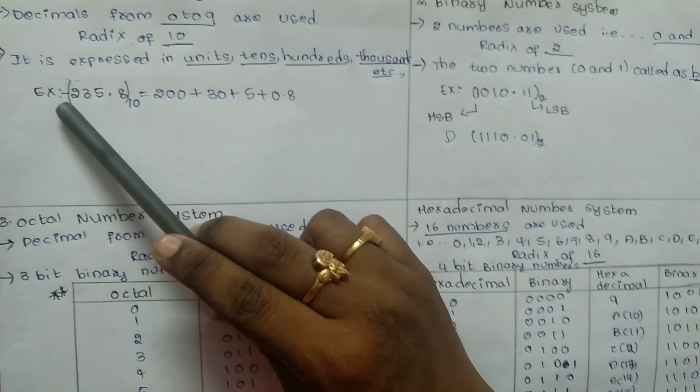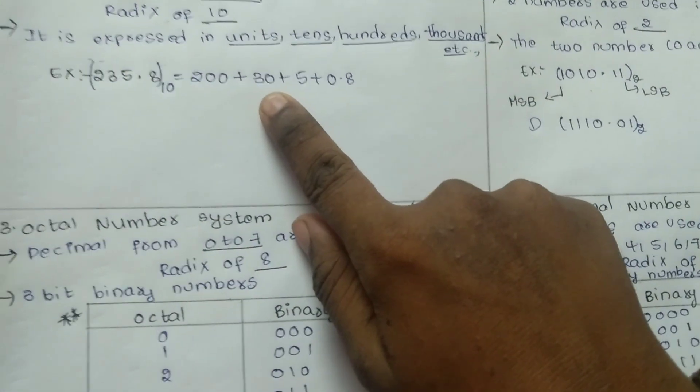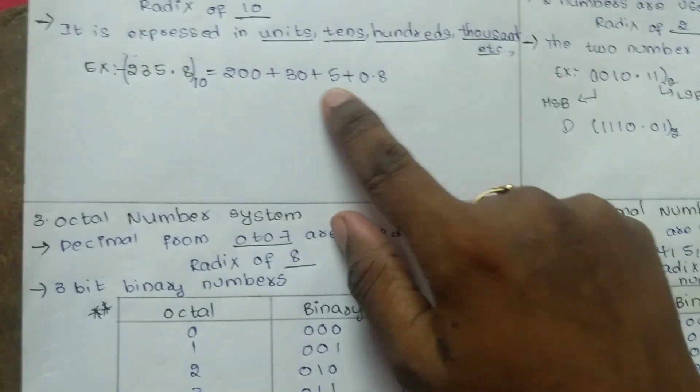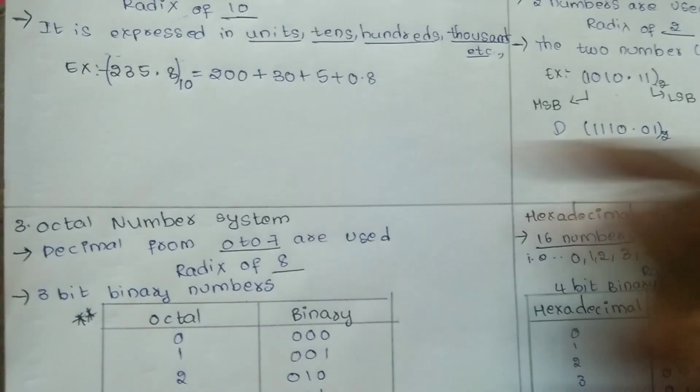200 is 2 times 100, 30 is 3 times 10, 5 is 1 times 5, and 0.8 is the decimal place.